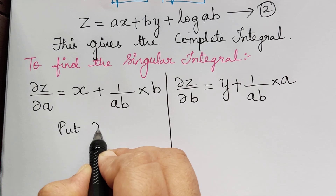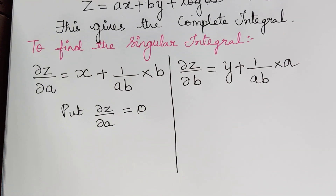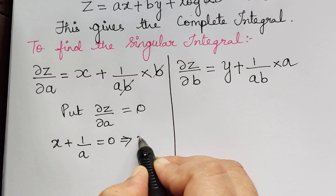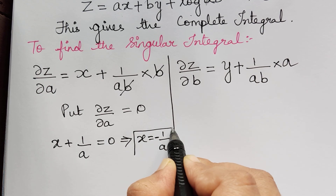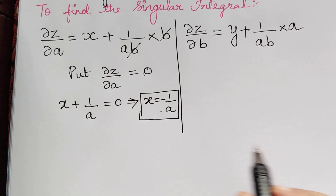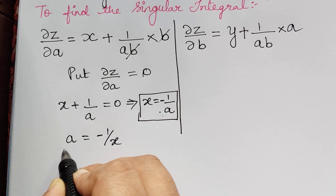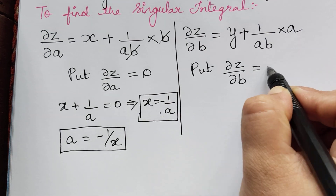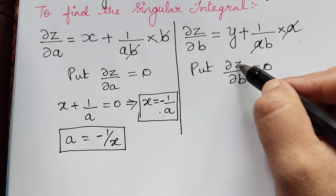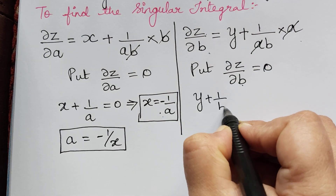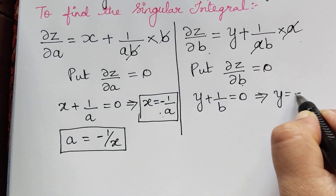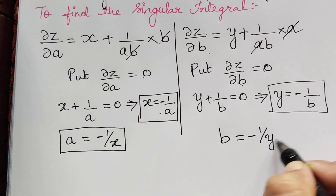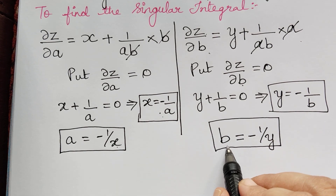Next, we set ∂z/∂a = 0. Here b and b get cancelled, so x + 1/a = 0, from which x = -1/a, giving us a = -1/x. Similarly, we set ∂z/∂b = 0. Here a and a get cancelled, giving y + 1/b = 0, so y = -1/b, giving b = -1/y. Therefore, the value of a is -1/x and the value of b is -1/y.